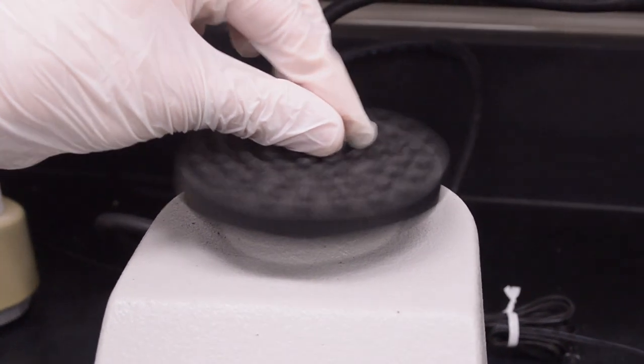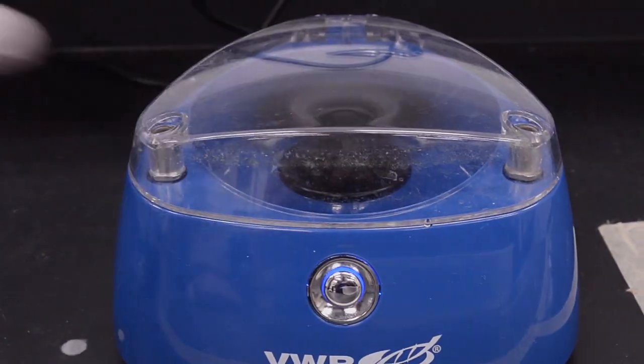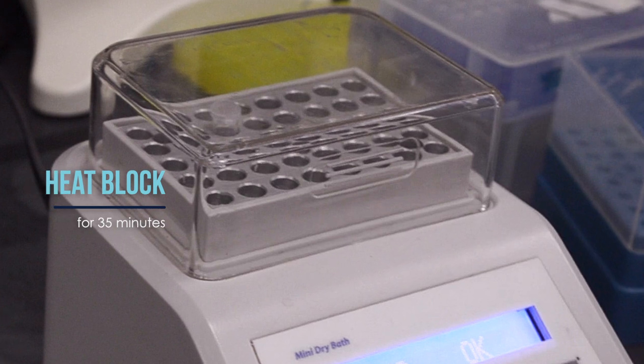Vortex and centrifuge the sample, then place it in the heat block for 35 minutes.